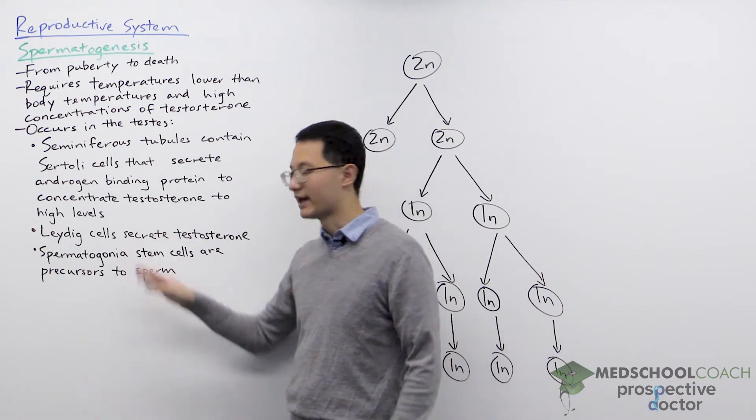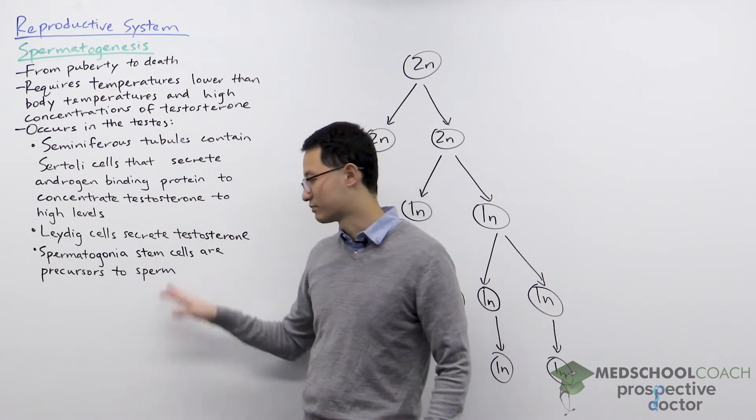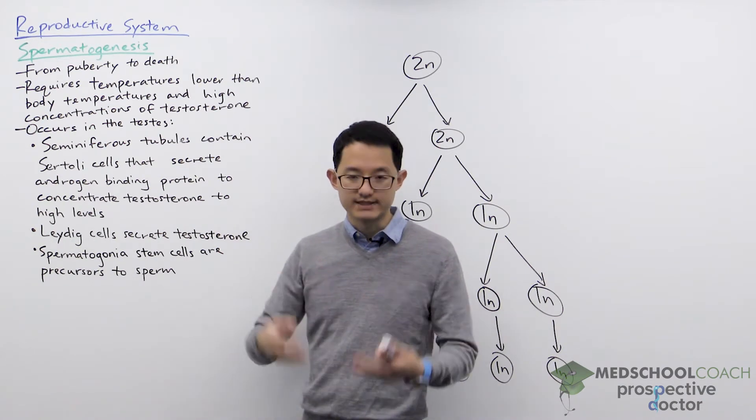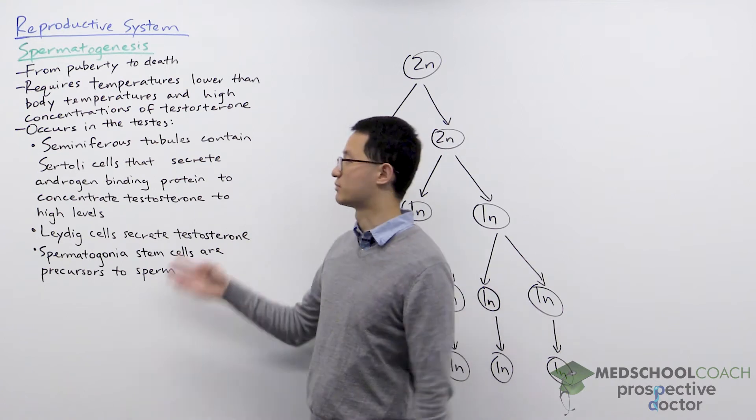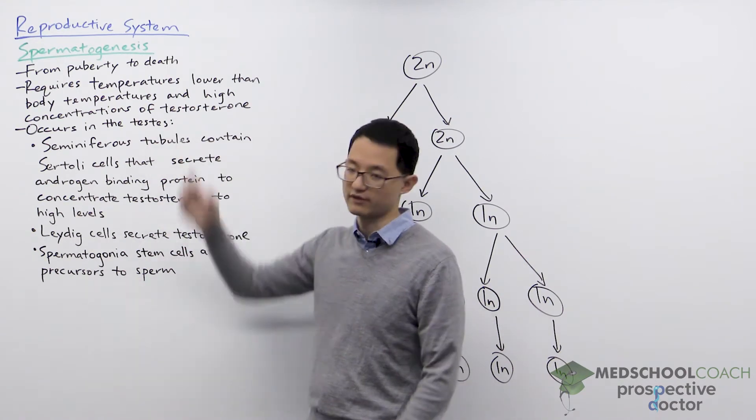And finally we have spermatogonia. These are stem cells that are precursors to sperm and they are consistently renewed in males to allow for spermatogenesis throughout the entire duration of the male's life starting from puberty.